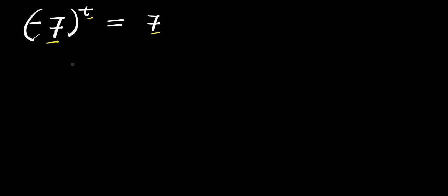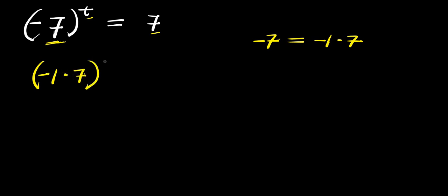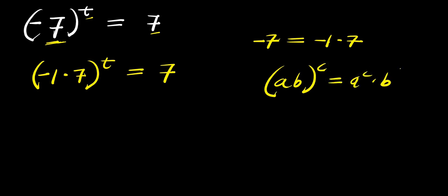Let's start with the first method. I'm going to replace this negative 7 with negative 1 times 7. So this simply means we have negative 1 times 7 raised to the power of t, and this equals 7. Remember, if I have a times b raised to the power of c, this equals a to the power of c times b to the power of c. So what I'm going to have will be negative 1 to the power of t times 7 to the power of t, and this equals 7.